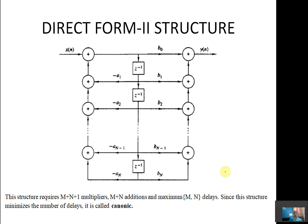This is the complete diagram. In this way we can reduce the number of memory units compared with Direct Form 1. This structure requires M plus N plus 1 multipliers and M plus N additions, same as Direct Form 1. But the delay units are reduced here — maximum of M or N delay units are required. In Direct Form 1 it requires M plus N memory units, so this is the advantage, and that is why this is also called the Canonic Form.